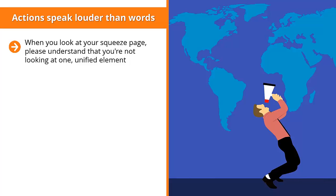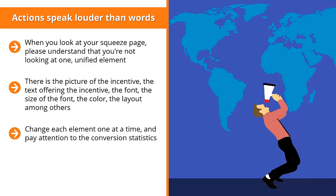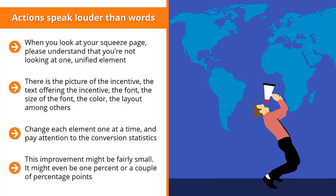When you look at your squeeze page, understand that you're not looking at one unified element — the squeeze page is actually made up of many different parts: the picture of the incentive, the text offering the incentive, the font, the size of the font, the color, the layout, among others. Change each element one at a time and pay attention to the conversion statistics. Make many different variations and test these variations against your traffic. You should quickly see that at least one variation has a higher conversion rate than others.